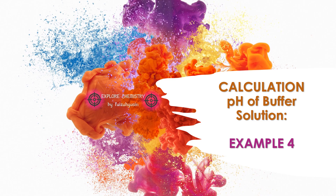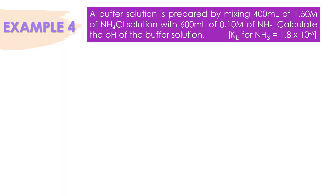Calculation pH of buffer solution, example 4. A buffer solution is prepared by mixing 400 ml of 1.50 molar NH4Cl solution with 600 ml of 0.10 molar of NH3. Calculate the pH of the buffer solution. Kb for NH3 is 1.8 times 10 to the power of negative 5.